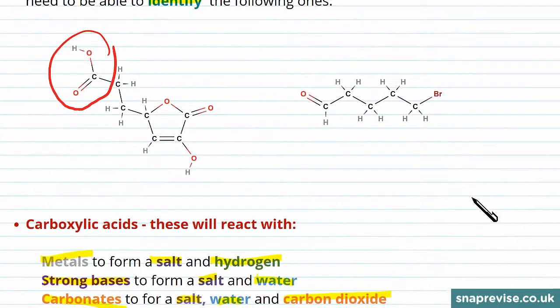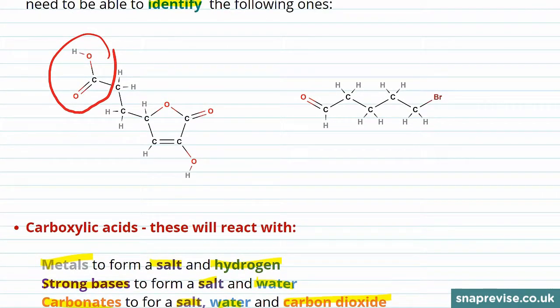To identify these groups in the molecule above, the sort of thing you're looking for is a carbon with an oxygen linking it to another carbon and then a double bond to an oxygen as well. This is the ester linkage.